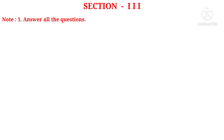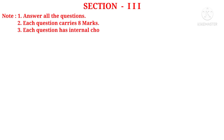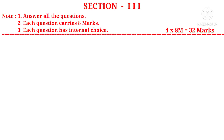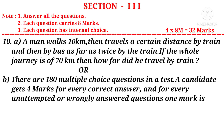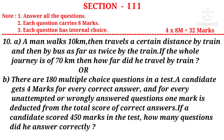Section 3: answer all questions, each carries 8 marks, each question has internal choice, there are 4 questions — 4 into 8 marks is 32 marks. Tenth problem A: A man walks 10 kilometers, then travels a certain distance by train, then by bus as far as twice by train. If the whole journey is 70 kilometers, how far did he travel by train? Or 10B: There are 180 multiple choice questions in a test; a candidate gets 4 marks for every correct answer and one mark is deducted for every unattempted or wrongly answered question. Both from Chapter 2, Linear Equations in One Variable.